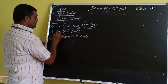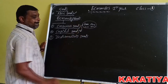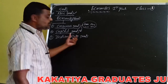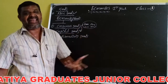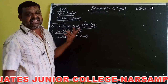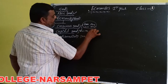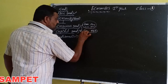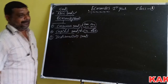Capital goods are the vice versa. Capital goods means goods which can satisfy human wants indirectly. For example, machinery and equipment. These are satisfied human wants indirectly.